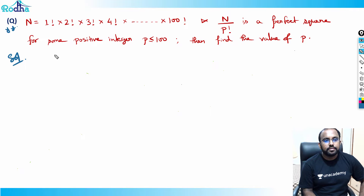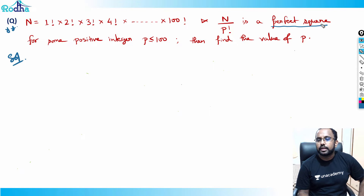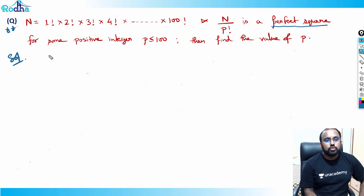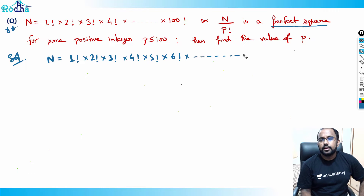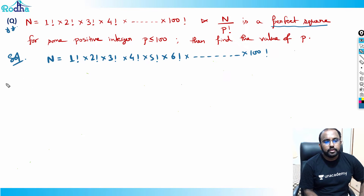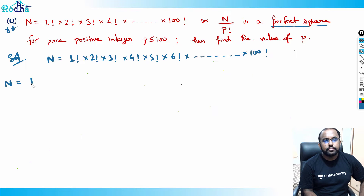Now what we need to do here is convert this to a perfect square. So how do we convert to a perfect square? Let's understand the concept. We write n equal to 1 factorial into 2 factorial into 3 factorial into 4 factorial into 5 factorial, writing a few terms here till 100 factorial.